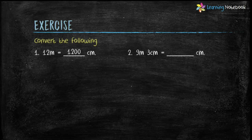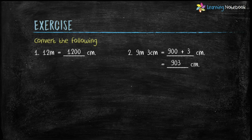Second part: 9 meters 3 centimeters equals to how many centimeters? 9 meters equals to 9 into 100, which equals to 900 centimeters. Then 900 centimeters plus 3 centimeters equals to 903 centimeters.